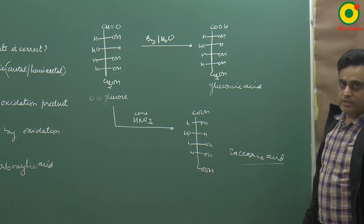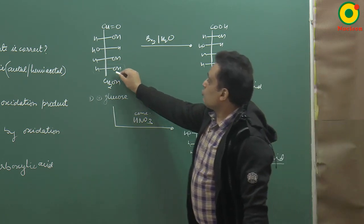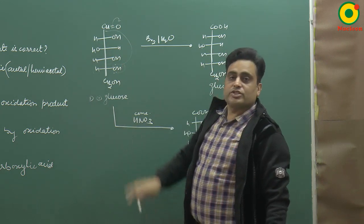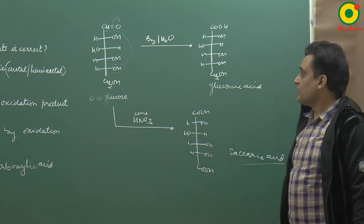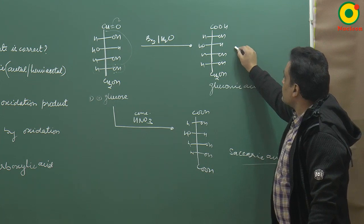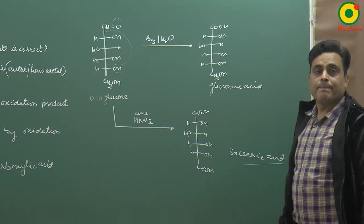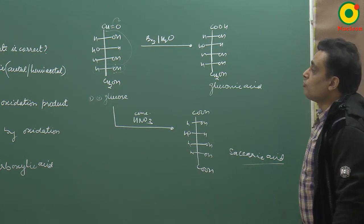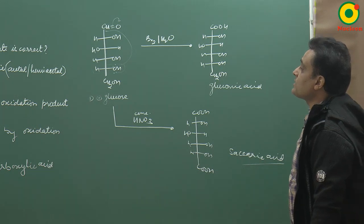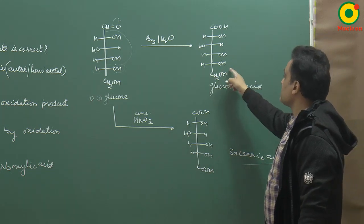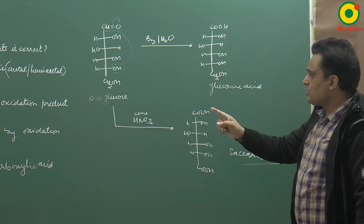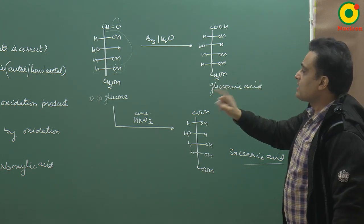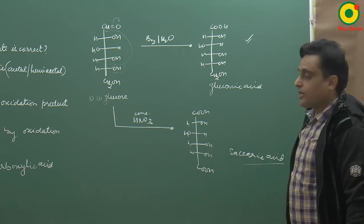In glucose, the 5th carbon OH can form a cyclic hemiacetal structure. However, in gluconic acid, the 5th carbon OH is not able to form a cyclic hemiacetal structure. So the first statement — that gluconic acid can form a cyclic hemiacetal or acetal structure — is wrong. The second statement — that gluconic acid is a partial oxidation product of glucose — is correct, because it is produced by partial oxidation of glucose.